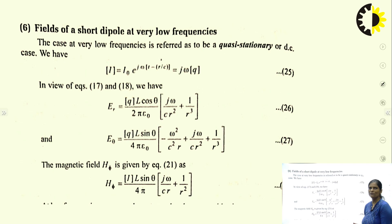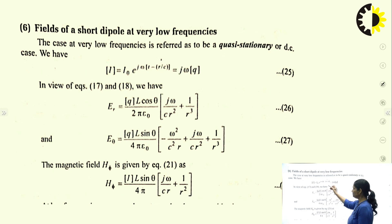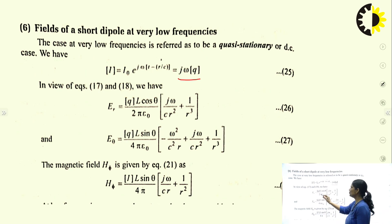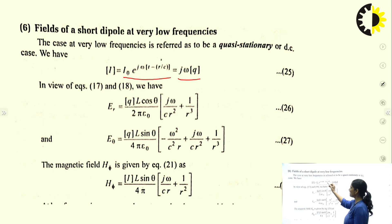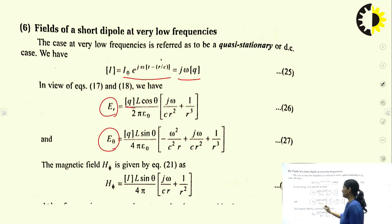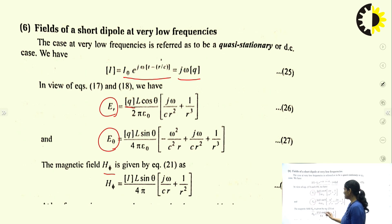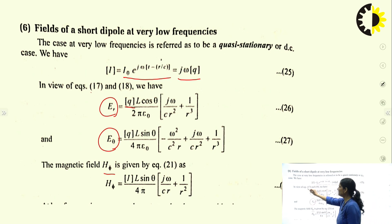For the field of a short dipole at very low frequency, this is the quasi-stationary or DC case. Here i = i_0 * e^(j(ωt - r/c)) and jωq is also used. Putting i_0 = jωq in the previous equations, we can find E_r, E_θ, and H_φ = i * l * sinθ / (4π) * [jω/(cr) + 1/r²].